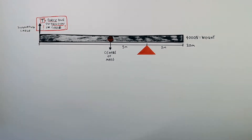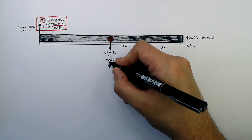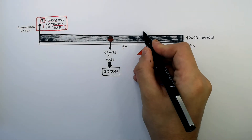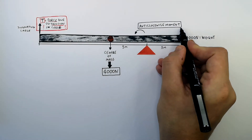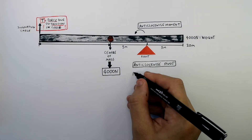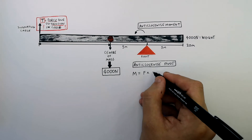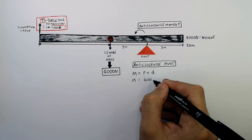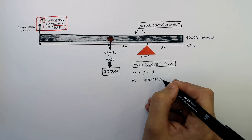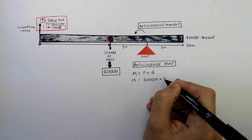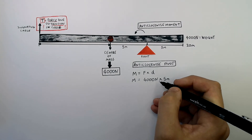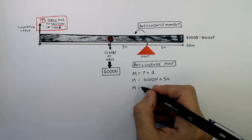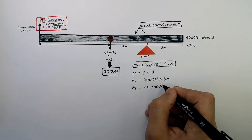We measure the weight of the steel pole at the centre of its mass, so this is 4000 newtons in weight. To calculate the anticlockwise moment, recall the equation M equals F times D, whereby the moment M is the mass of the steel pole — 4000 newtons — times by the distance from the pivot to the centre of the mass, which is 5 metres. It's not to the end of the pole, so it's not 15 metres. So the anticlockwise moment is 20,000 newton metres.